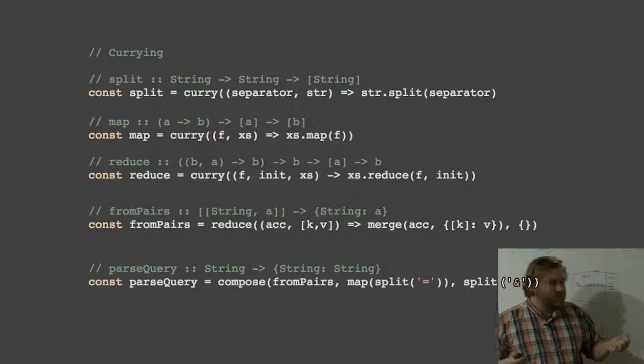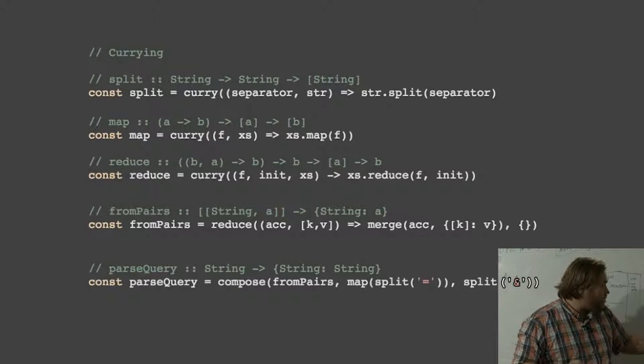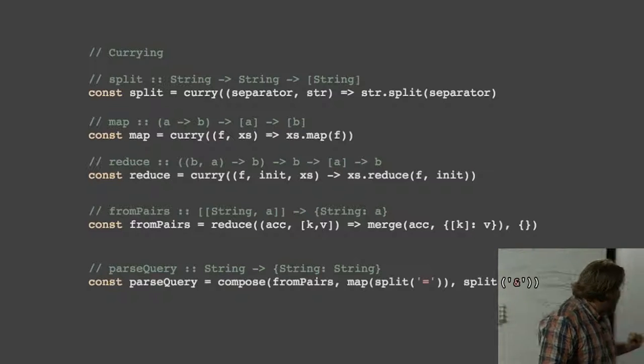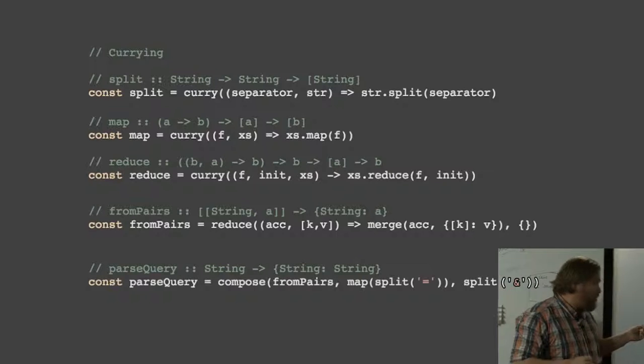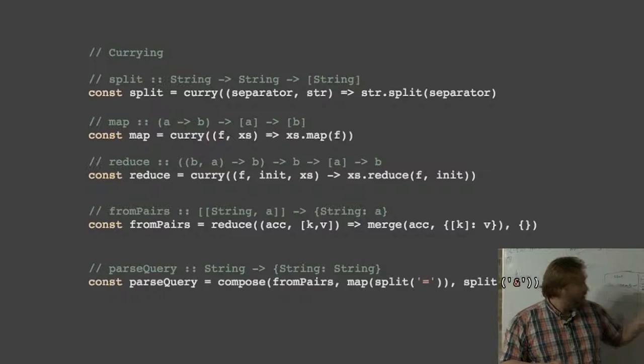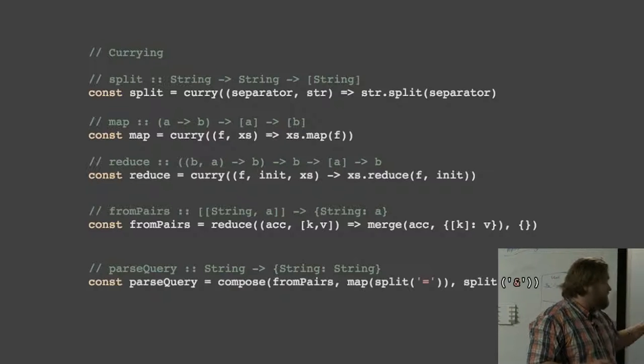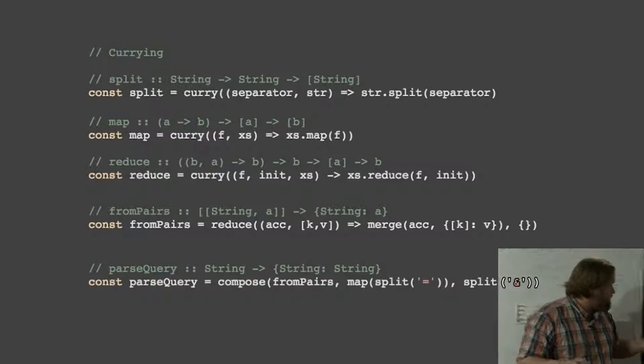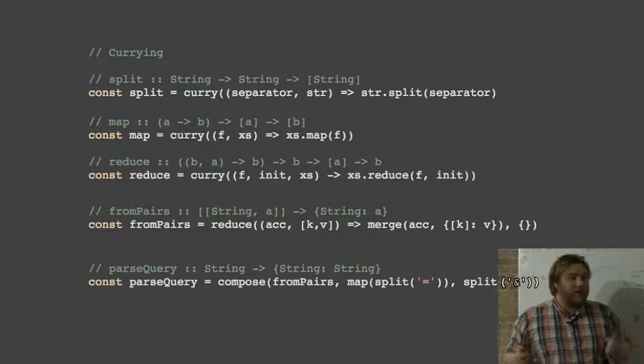I don't know if any of you have written those, or even better come across them in old code bases. They never look like this. They're never one line, and they're never particularly simple to keep track of. Another very interesting thing to note here is that the only function that has anything to do with queries or parsing queries is the last one. All of the other ones are generic functions from functional programming libraries. We just get them from a library. So extremely reusable code.